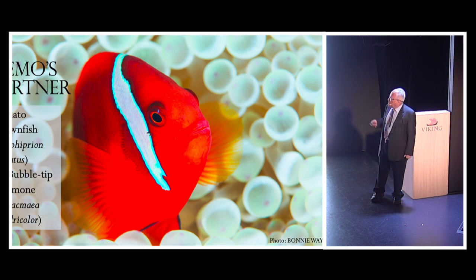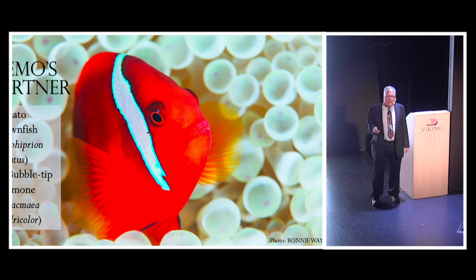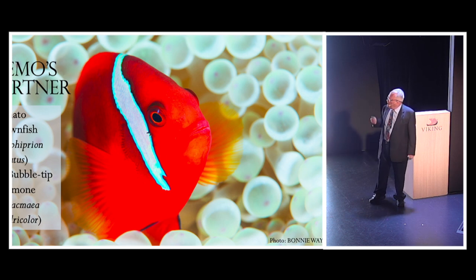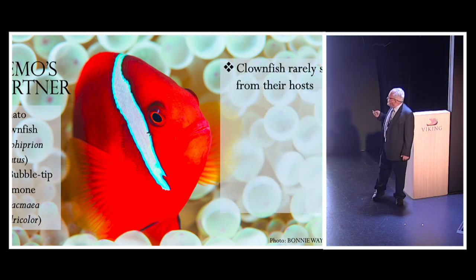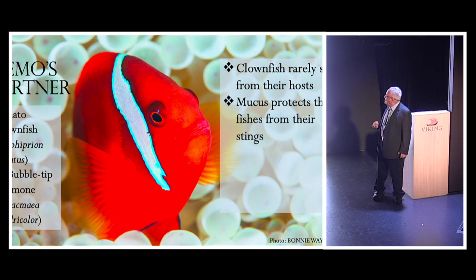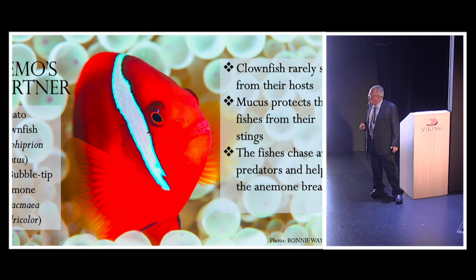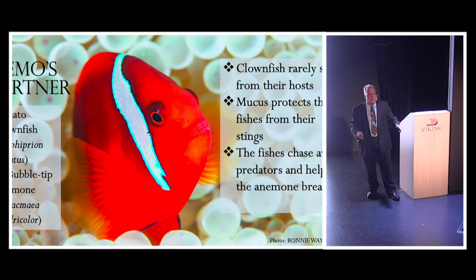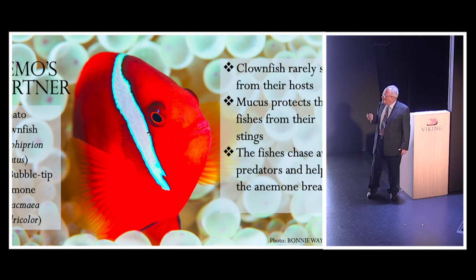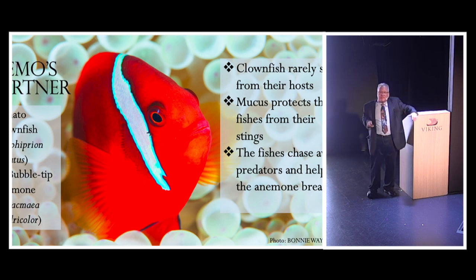One of the most famous examples of partnership is with the clown fish — all of you who've seen Finding Nemo will recognize one. Clown fish live in sea anemones whose tentacles are studded with those stinging cells we talked about earlier. They're covered with a mucus that protects them from the anemone's stinging cells. They chase away predators and build up a territory around the anemone, and by swimming around it they stir and mix the water so fresh oxygenated water reaches the anemone. So it's not just that the anemone gives the clown fish a place to hide — the clown fish actually performs a service for the anemone.